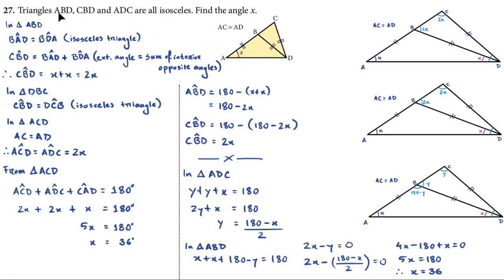Triangle ABD is this triangle, triangle CBD is this particular triangle, and ADC is the bigger triangle. For triangle ABD, AB is equal to BD. For triangle BCD, CD is equal to BD. And for the bigger triangle ACD, AC is equal to AD. So all three triangles are isosceles.